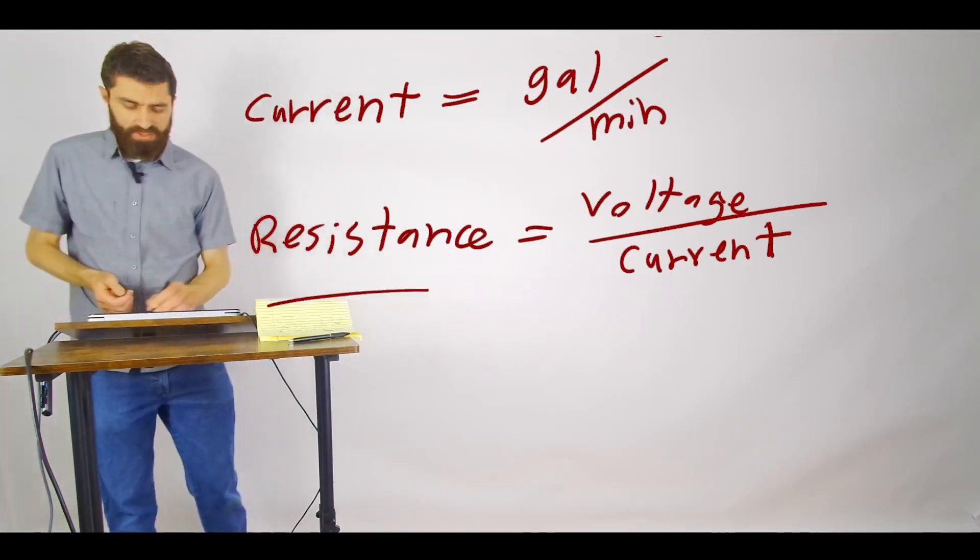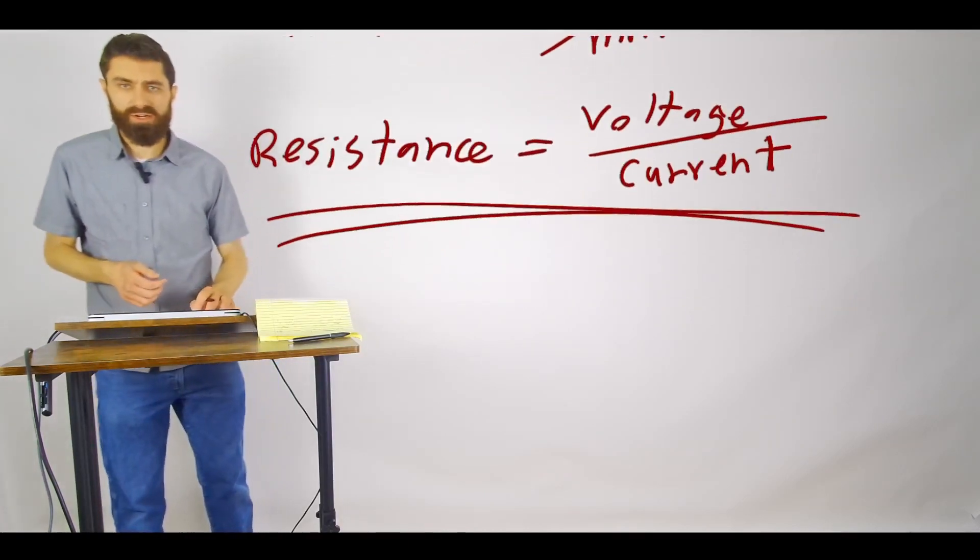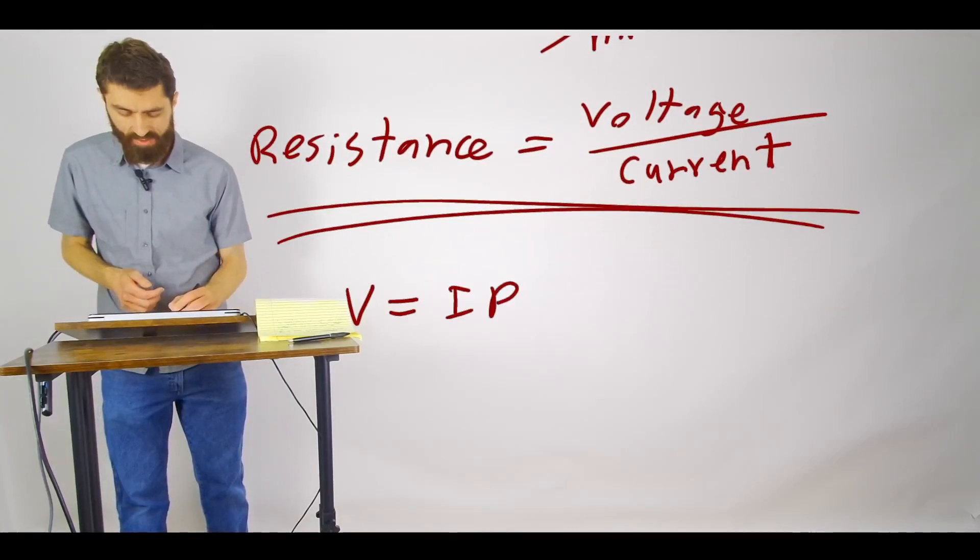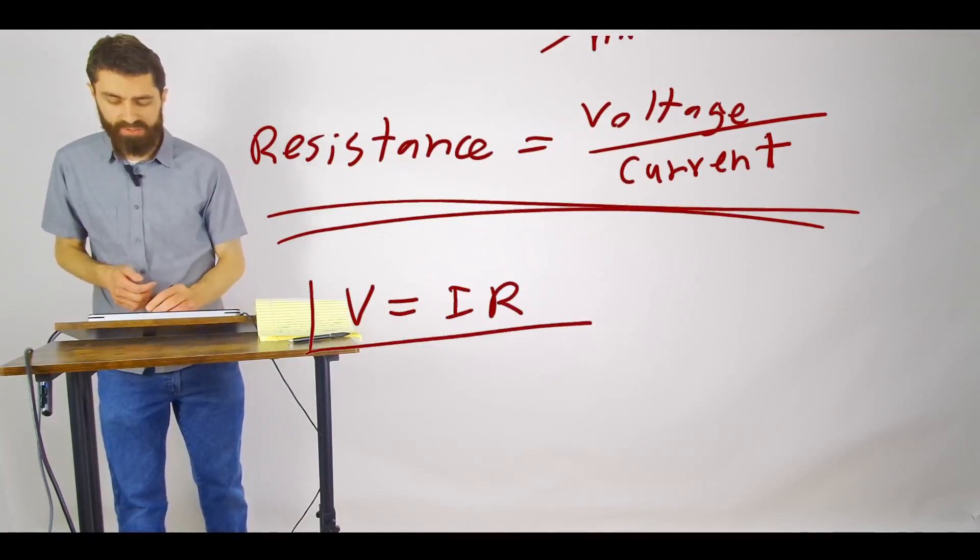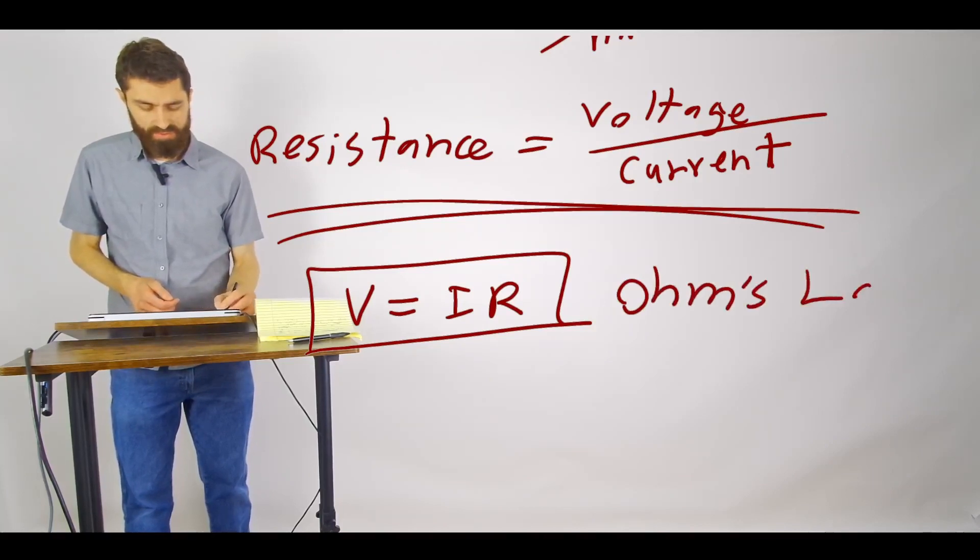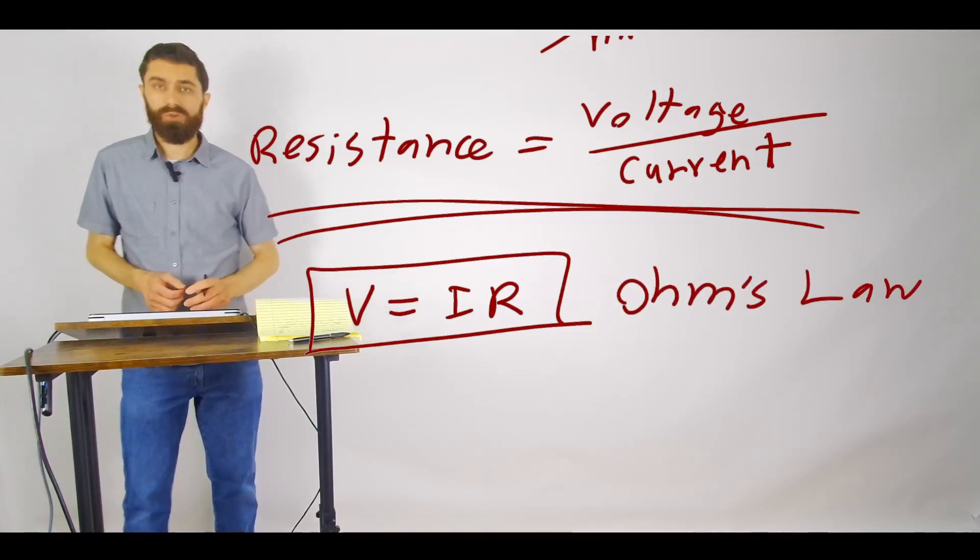So this relationship actually is called Ohm's law in circuits. That's typically just expressed as V equals IR, and it is a very fundamental relationship that you will be using in this course very frequently.